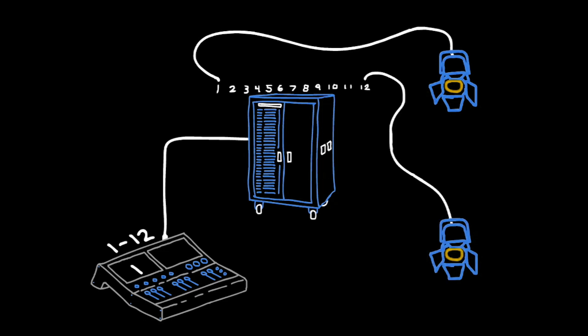Every time channel 1 is turned on, it talks to dimmer 1, which turns on whatever is plugged into it. If you turn on channel 12, it will turn on whatever is plugged into dimmer 12. This is the simplest form of how the components work together to create a conventional lighting system.